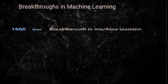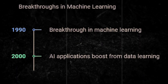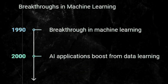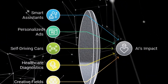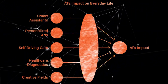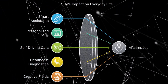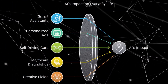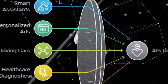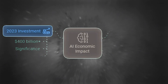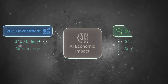Rise of machine learning — 1990s to 2000s — breakthrough in machine learning: computers learn from data, boosting AI's real-world applications. AI in everyday life today: AI powers everything from smart assistants like Siri to personalized ads, self-driving cars, healthcare diagnostics, and even creative fields are transformed by AI.